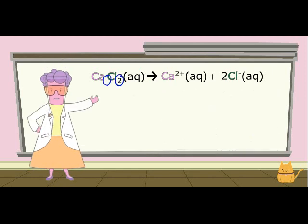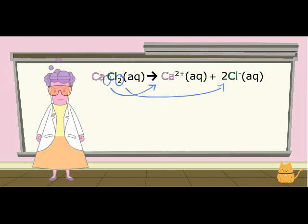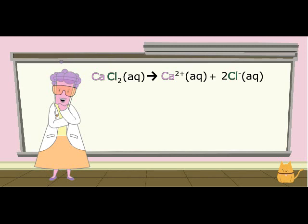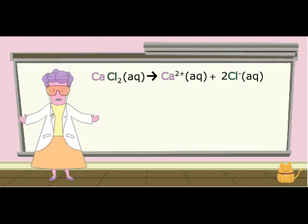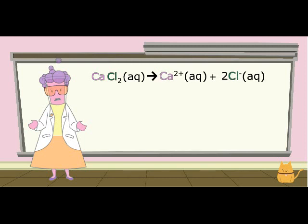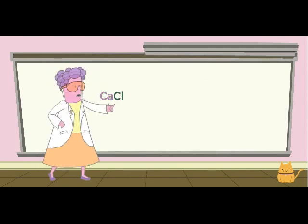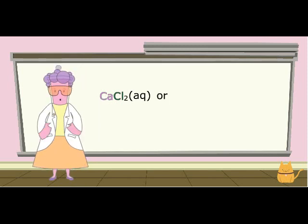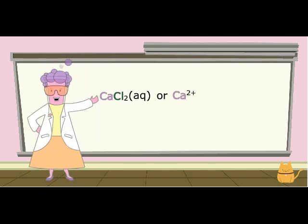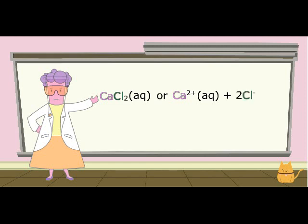Notice that the subscripts in the formula become coefficients when we show the ions separately. It is appropriate to represent strong electrolytes either by the molecular formula followed by AQ or as the separated ions. For example, CaCl2AQ or Ca2+ AQ plus 2Cl- AQ.